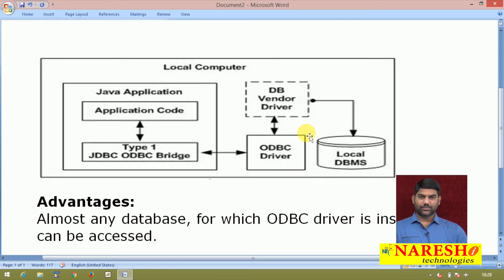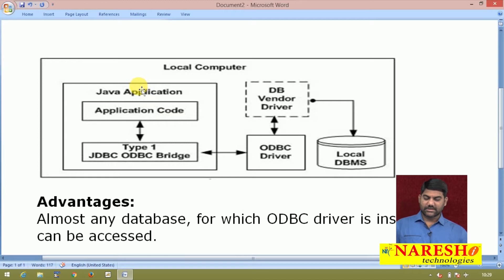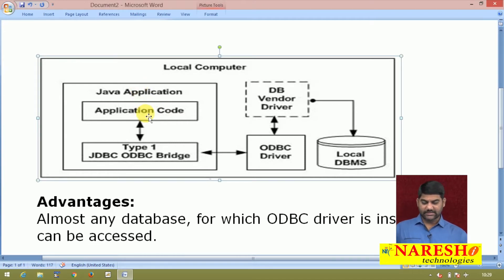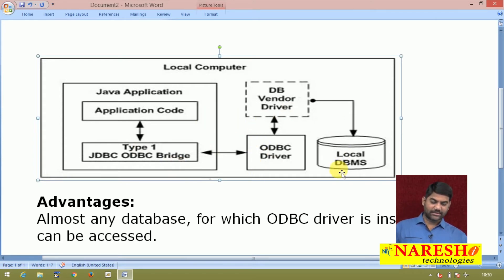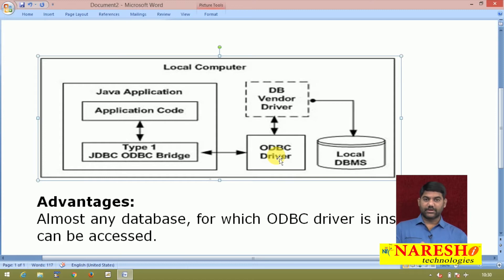What is the execution process? This is the execution process diagram. In our local machine - that is our current working computer - this is our Java application. The Java application contains the Java code as well as the JDBC code - that is the JDBC-ODBC bridge driver, type 1. In the same client machine we also have databases, ODBC drivers, and database vendor drivers. This is the total setup required for executing JDBC applications in the type 1 approach.